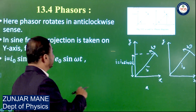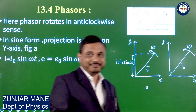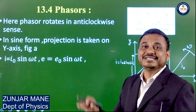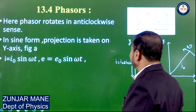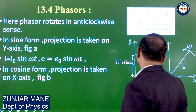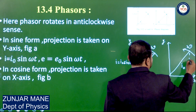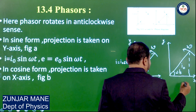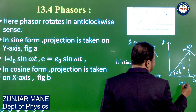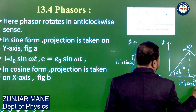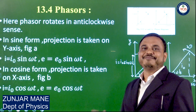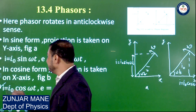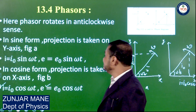Instead of current, if there is a voltage, then it will be represented as E₀ sin(ωt). So the projection of the phasor diagram on the y-axis gives sinusoidal values: I = I₀ sin(ωt) or E = E₀ sin(ωt). We may also take their projection on the x-axis. Suppose the phase angle is ωt — then this value gives the instantaneous value I = I₀ cos(ωt). This is Figure B. So the projection of the rotating vectors on the x-axis gives cosine values: I = I₀ cos(ωt) and E = E₀ cos(ωt).